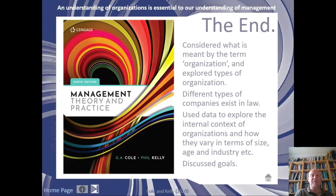Coming to the end of the presentation, just to recap: an understanding of organisations is essential to our understanding of management, which is our primary goal in this part of the book, and we'll revisit it again in chapter eight. We considered what we mean by an organisation, particularly as collections of people in pursuit of a common goal, and explored different types of organisation from a legal point of view. We then went on to look at the attributes of organisation, particularly in terms of size, age, industry, and throughout the presentation I've tried to emphasise why it's important to think about these variables.